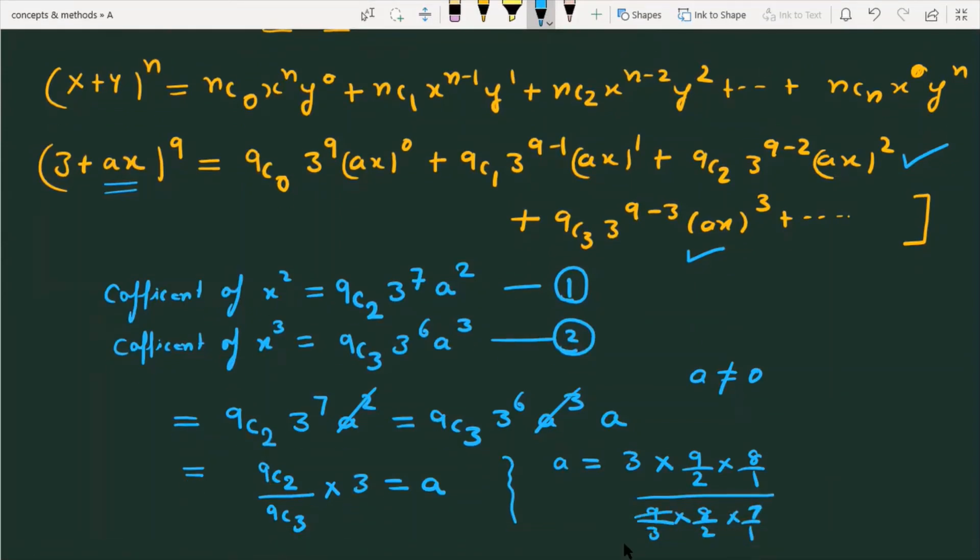You can see that 9 cancels with 9, 8 with 8, 2 with 2, and you can shift 3 to the numerator. From this condition we get the value of a which equals 9/7, and that is the answer to the given question. You were asked for what value of a this condition is valid, so the value of a equals 9/7.